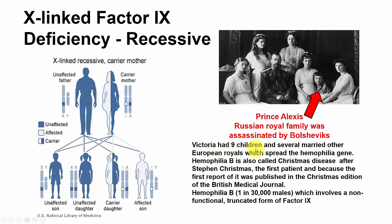Victoria had nine children and several married other European royals, spreading the hemophilia gene. Hemophilia B is also called Christmas disease, named after Steven Christmas, the first patient, because the first report was published in the Christmas edition of the British Medical Journal. Hemophilia B is fairly rare — about 1 in 30,000 males — and involves a non-functional, truncated form of Factor 9.